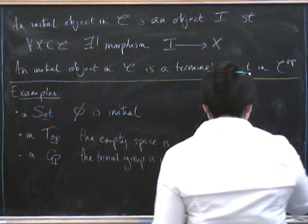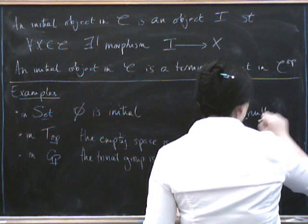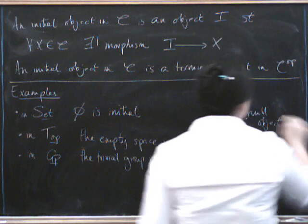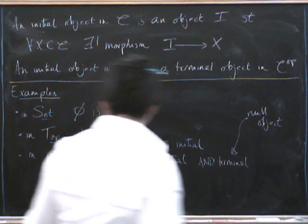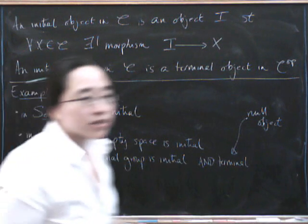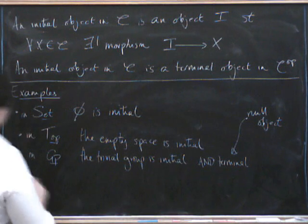And so, sometimes it's given the name null object, which means it's terminal and initial. There are other categories with objects that are terminal and initial.